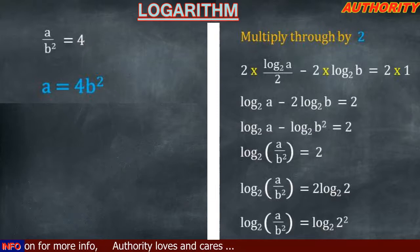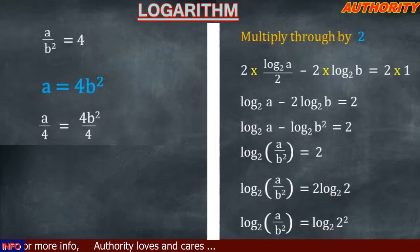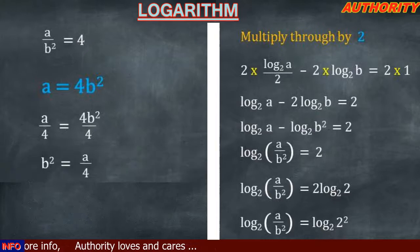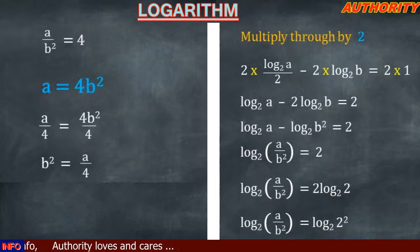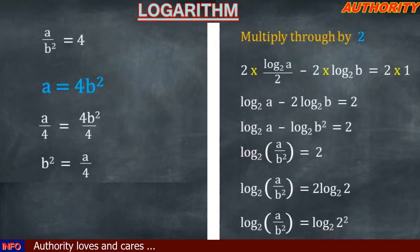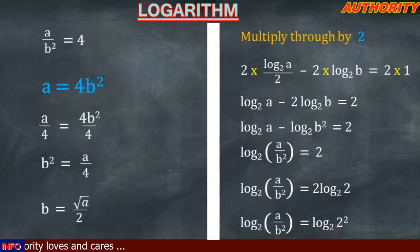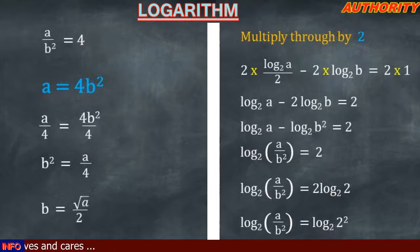Now let's find the value of b. We have a equal to 4b². Dividing both sides by 4 gives b² equal to a over 4. Since we're looking for b, not b², we take the square root of both sides. That gives us b equal to the square root of a over 4, which simplifies to the square root of a all over 2.